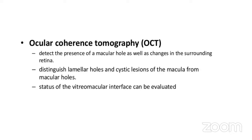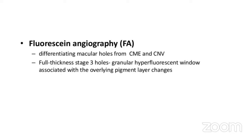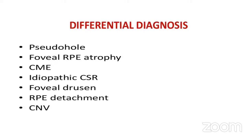OCT also describes the status of the vitreo-macular interface. Fluorescein angiography is not routinely performed — it can be performed when CNV is suspected, to distinguish macular holes from CME and CNV. Full thickness stage 3 holes have granular hyperfluorescent window defects associated with overlying pigment epithelial changes. Differential diagnoses of macular hole include pseudo-hole, foveal RPE atrophy, cystoid macular edema, idiopathic CSCR, foveal drusen, RPE detachment, and CNV.